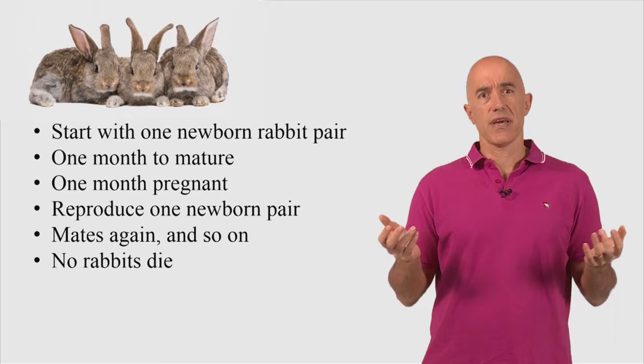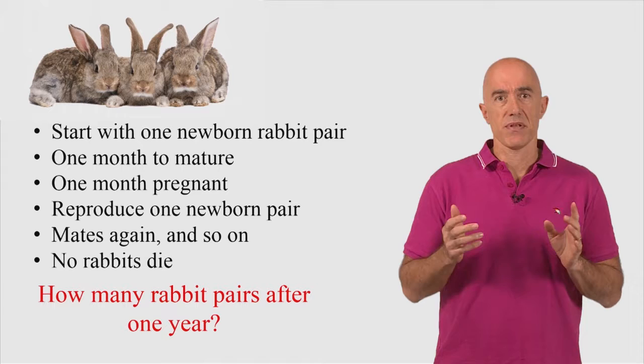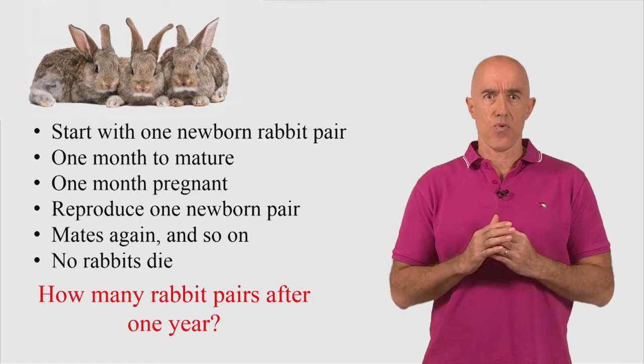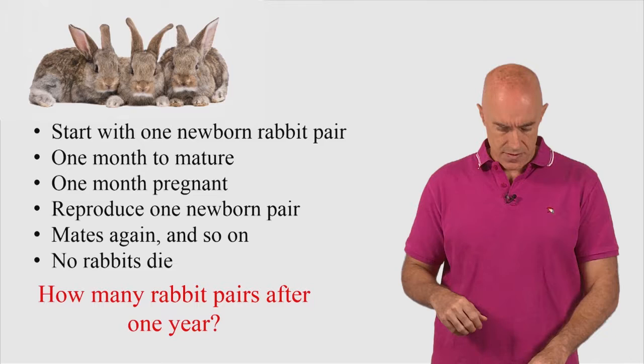Also, we make a simplification in this problem. Either it's a very short time interval or we just assume that no rabbits will die. So the problem posed by Fibonacci was how many rabbit pairs would there be after one full calendar year? So what we need to do then is we need to count rabbit pairs. So we can do that by constructing a table.